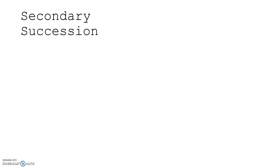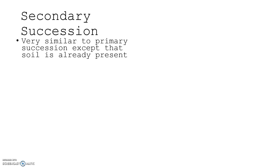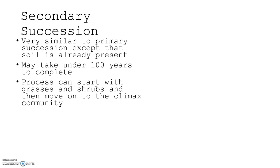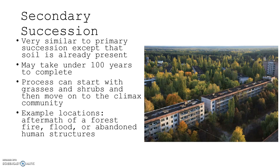In secondary succession, the key difference is that you start with soil, so you can skip the first step of lichens and mosses. Because the soil is already present, it can take under 100 years to complete — building that soil is what takes such a long time. The process can start with grasses and shrubs and then move on to the climax community, following the same sequence, just quicker. Example locations include after a forest fire, flood, or abandoned human structures.